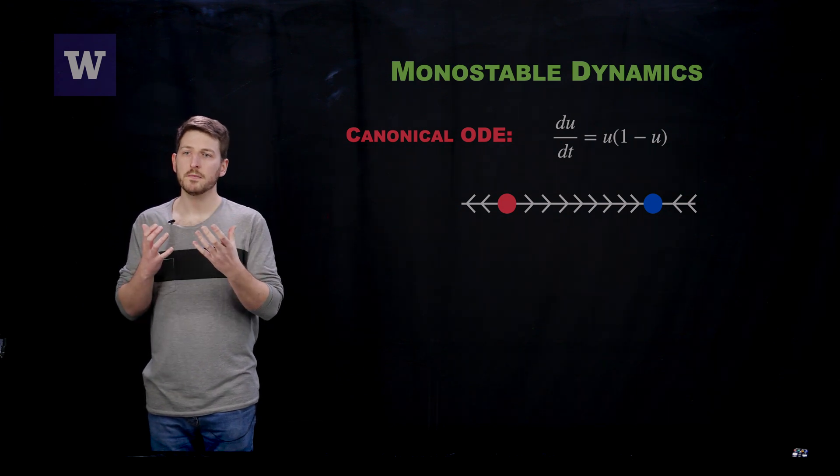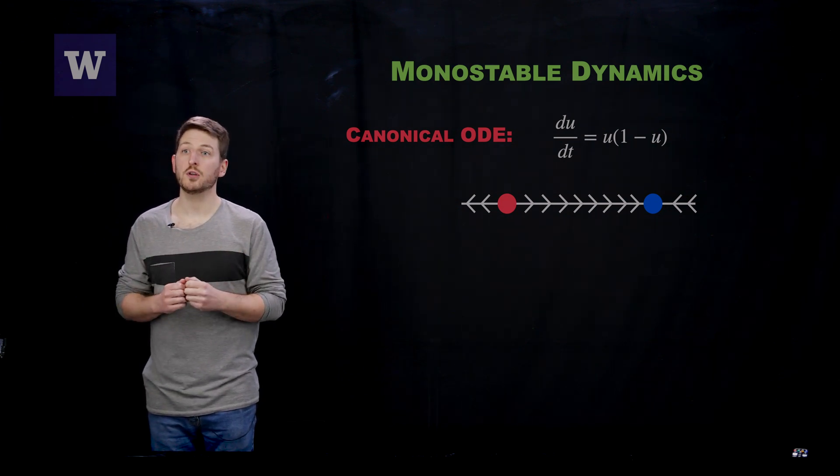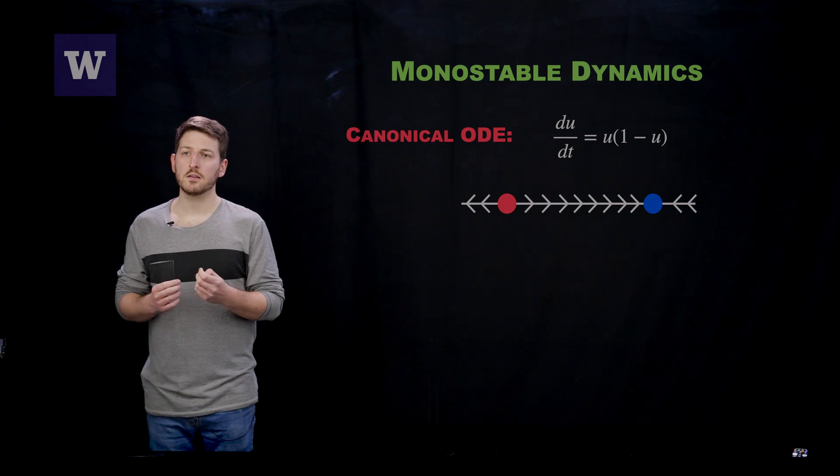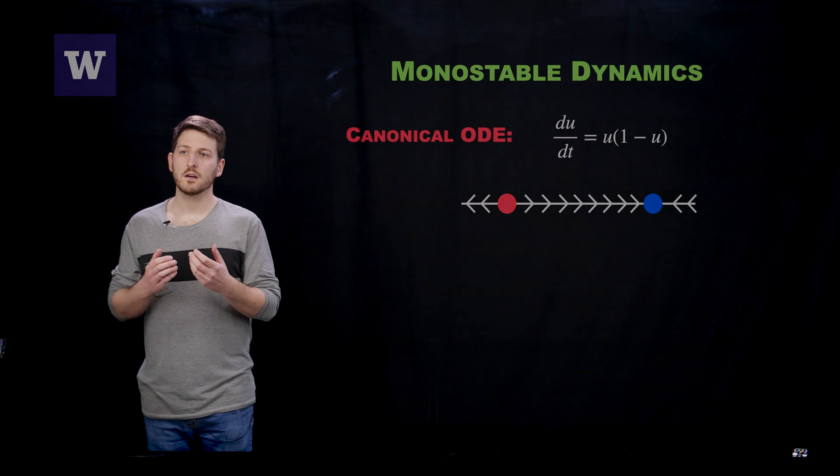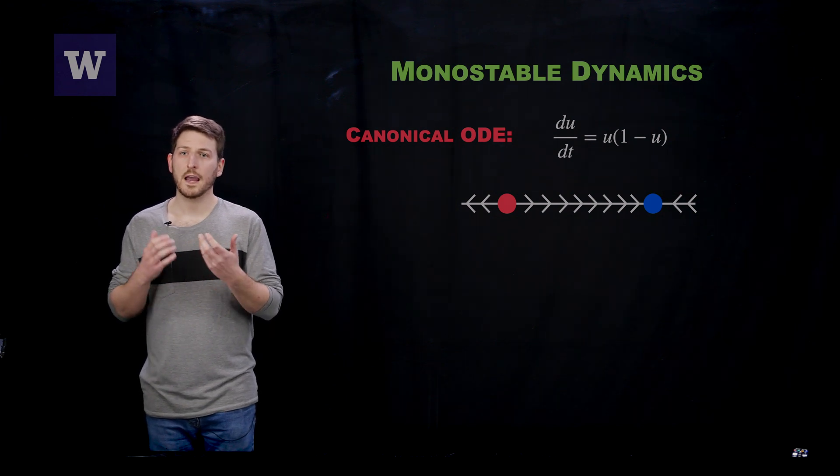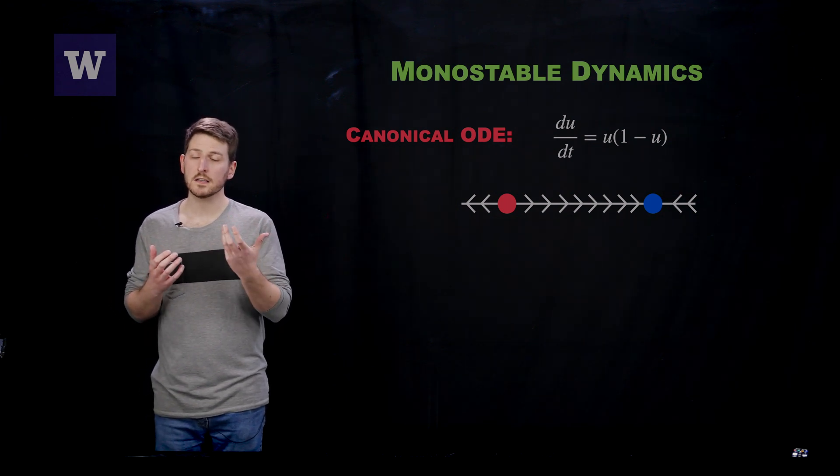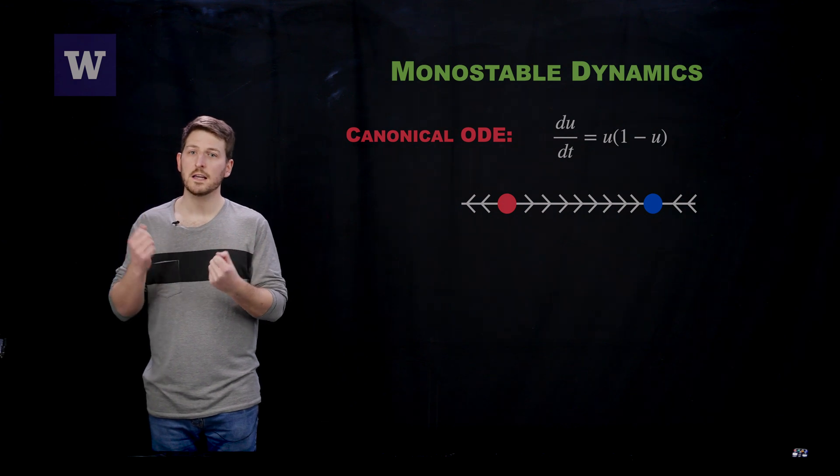You can see that there are exactly two equilibria associated with this system. The red one is the extinction state, that's u = 0, and the blue one is the persistent state, that's u = 1. What you can see is that the blue state is stable, whereas the red state is unstable.